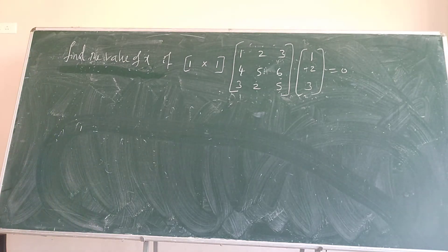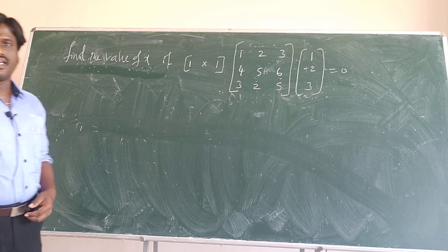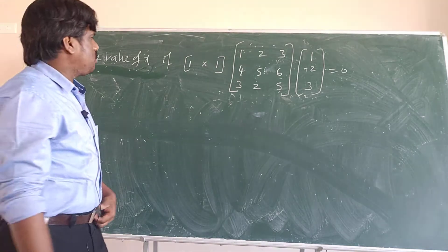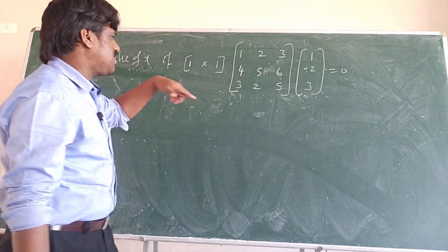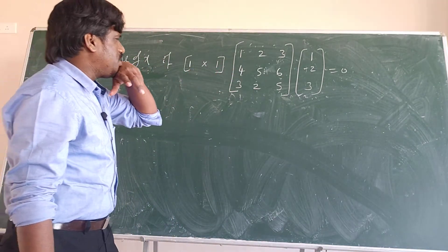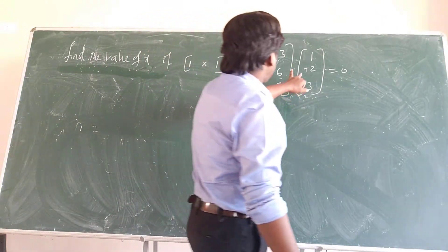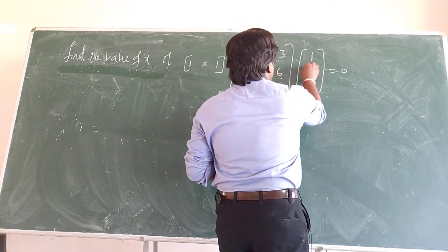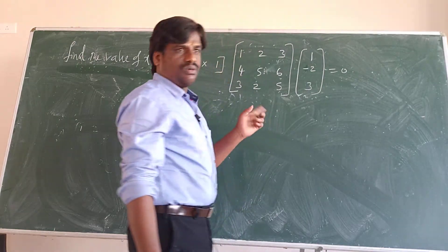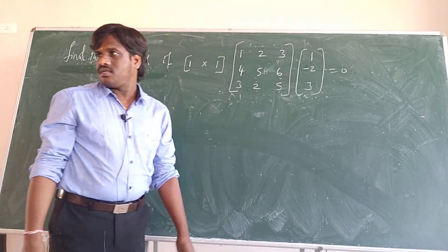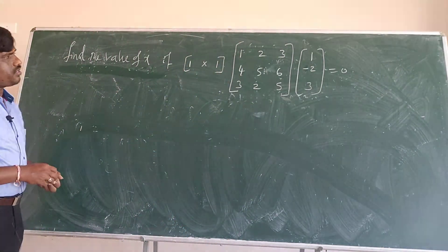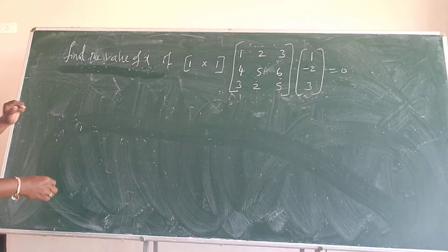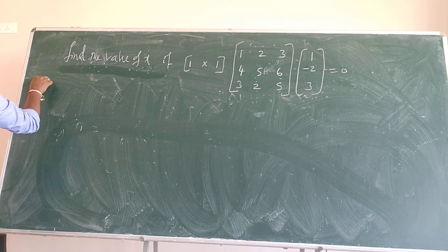See here, this is the question. Find the value of x. If matrix [1, x, 1] multiplied by matrix [[1, 2, 3], [4, 5, 6], [3, 2, 5]] multiplied by [1, -2, 3] is equal to 0. I am not sure it is minus 2 or not. Let us see here. How to solve this question?